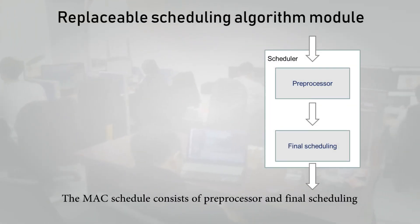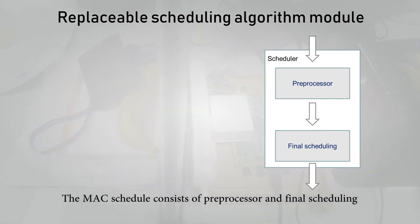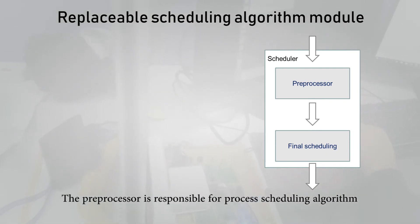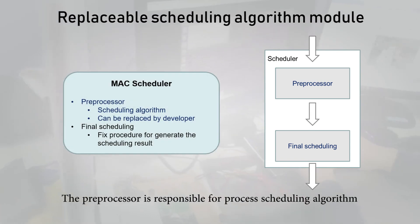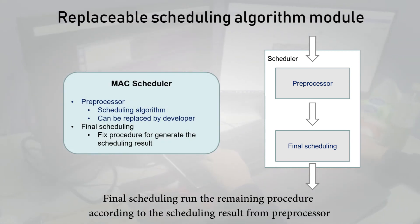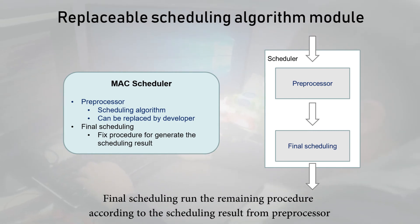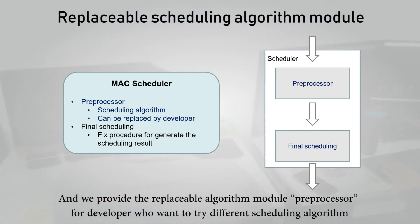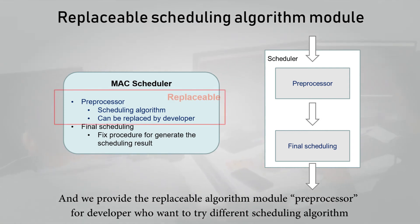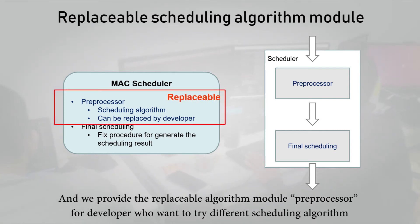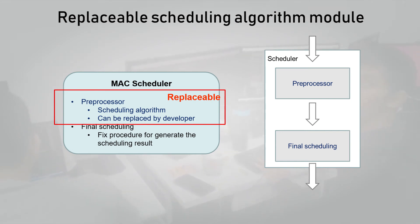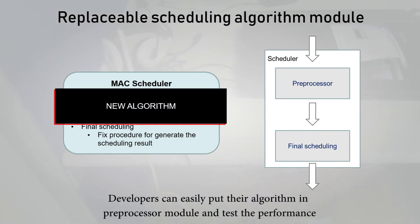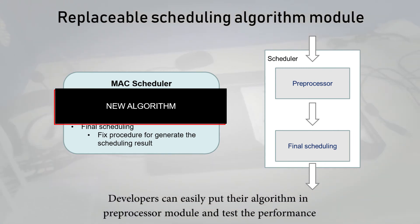The MAC scheduler consists of a preprocessor and final scheduling. The preprocessor is responsible for processing the scheduling algorithm, while final scheduling runs the remaining procedures according to the result from the preprocessor. We provide a replaceable algorithm module in the preprocessor for developers who want to try different scheduling algorithms. Developers can easily plug their algorithm into the preprocessor module and test performance.